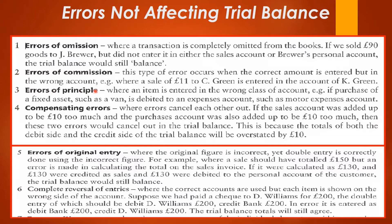Next we have errors of principle, where an item is entered in the wrong class of account — that is, you got your principles wrong. For instance, the purchase of a fixed asset such as a brand is debited in an expense account. So here you have an asset being recorded in an expense account.